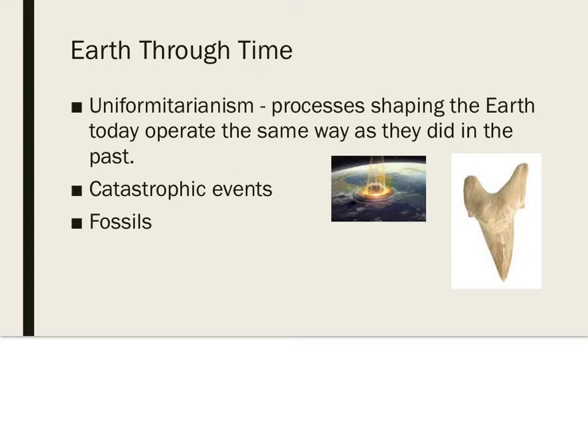Let's talk about Earth through time. Scientists can learn about the history of Earth by studying rocks and fossils. The Earth has changed over time. Uniformitarianism is a geological principle stating that processes shaping the Earth today operate the same way as they did in the past. Another way to state it is that the present is the key to the past. Environmental conditions on Earth change constantly — some changes cause major impacts, while others have more minor effects.